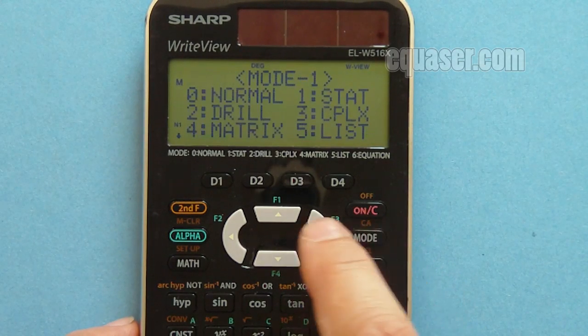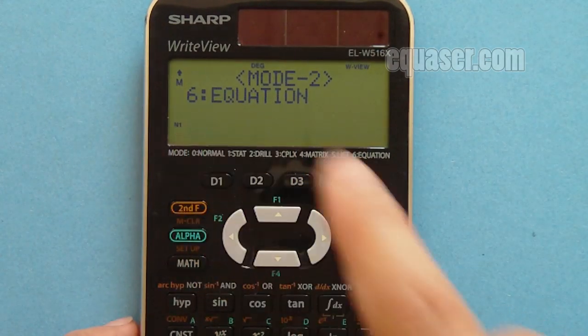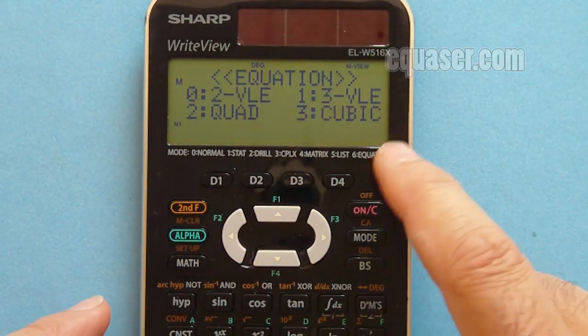First I press the mode button and then scroll down. As you can see, equation is number six, so now I'm on the equation screen.